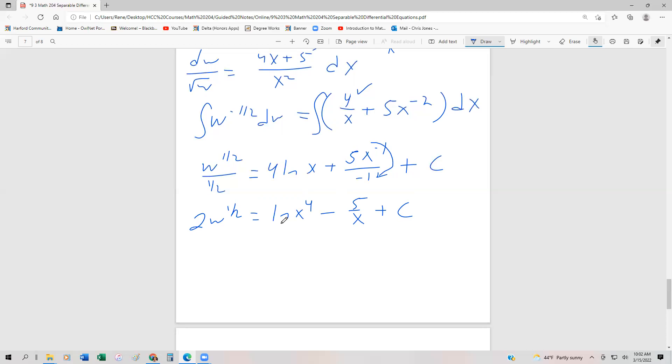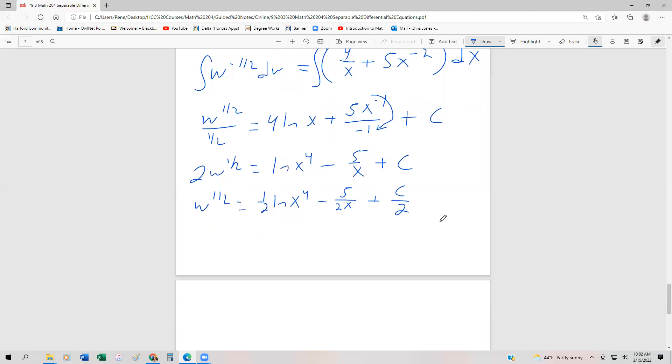We're going to divide both sides by 2 because we have to solve in terms of the dependent variable. So we get w to the one half equals one half ln(x⁴) minus 5 over 2x plus c over 2. And then finally, we can square both sides because we're trying to undo a one half power, which is really a square root.